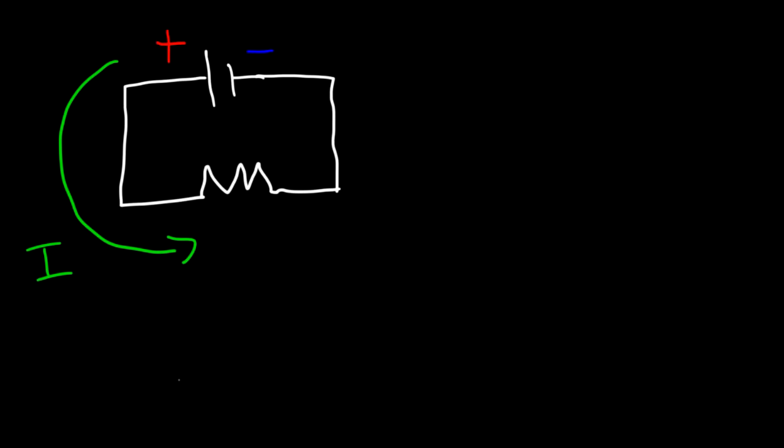Electron flow is the opposite. In reality, electrons emanate from the negative terminal and flow towards the positive terminal. So just keep that in mind.